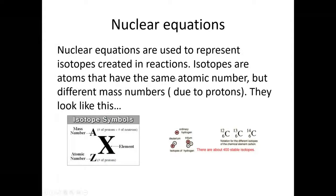Nuclear equations are used to represent the changes that occur in nuclear reactions. Isotopes, as we learned earlier, are atoms that have the same atomic number but different mass numbers due to different numbers of protons and neutrons. We've covered this when we looked at carbon - carbon-12, carbon-13, and carbon-14 all have six protons, but different numbers of neutrons: six, seven, and eight respectively. The isotope symbol format: the bottom number is the number of protons, and the top number is protons plus neutrons - both numbers relate to the name on the periodic table.